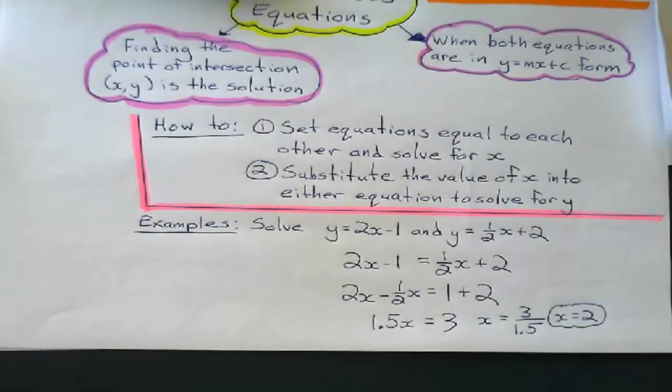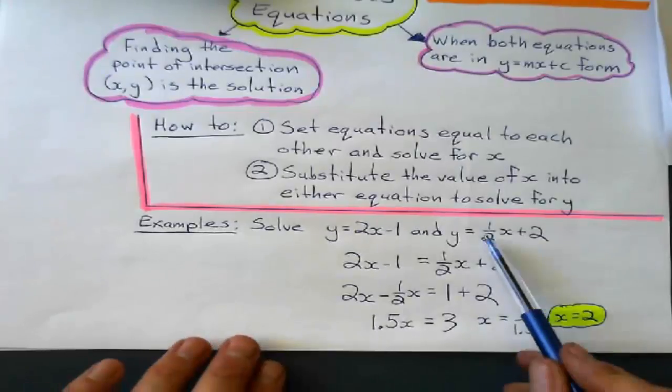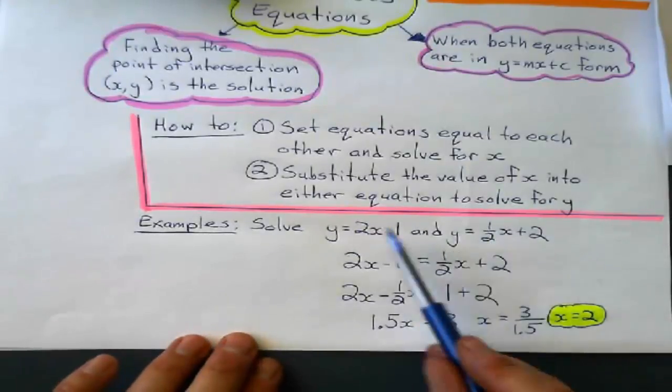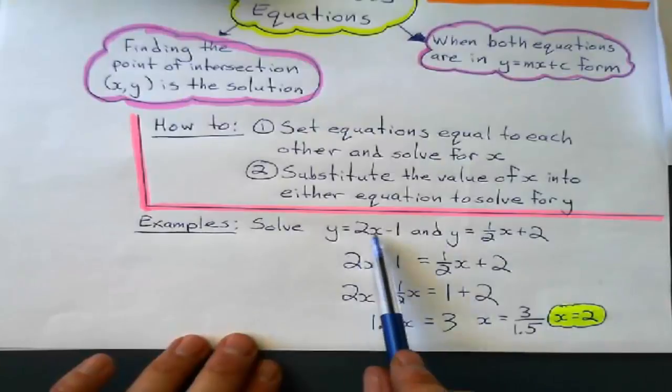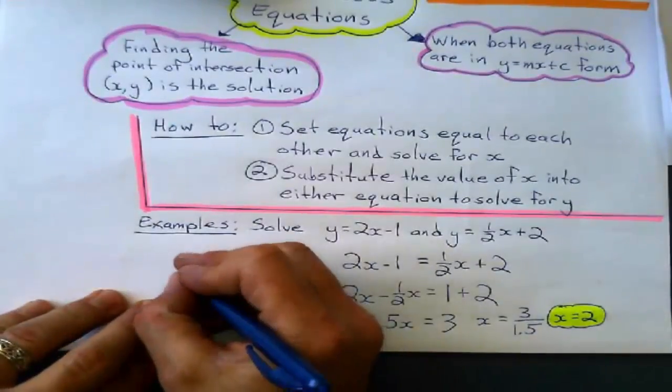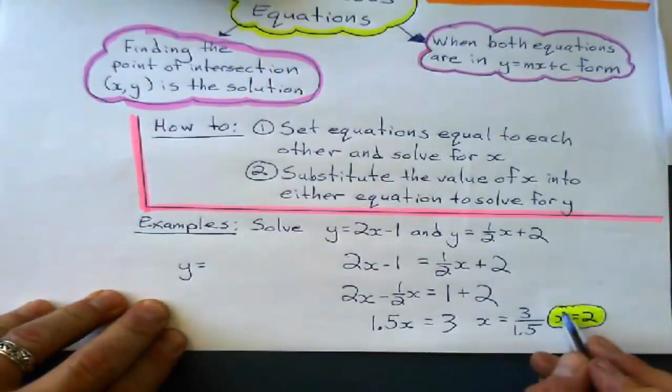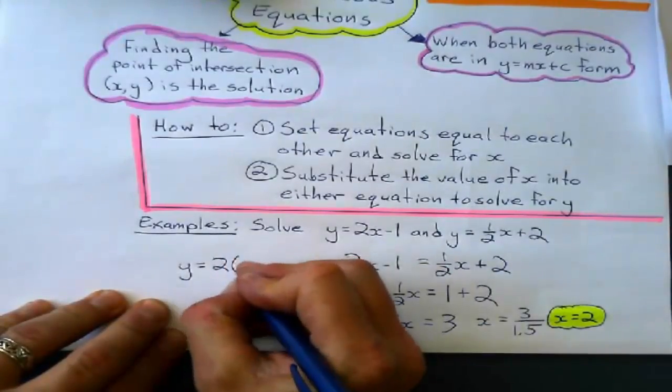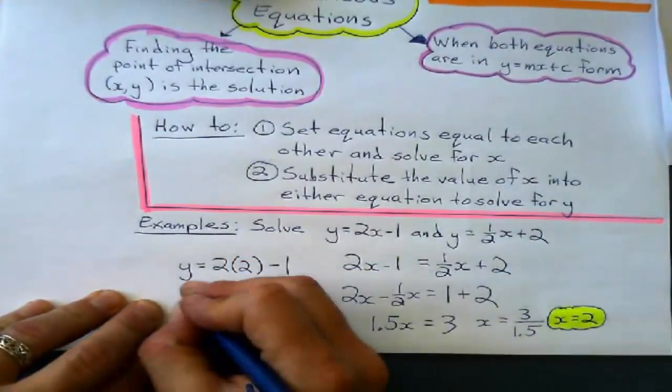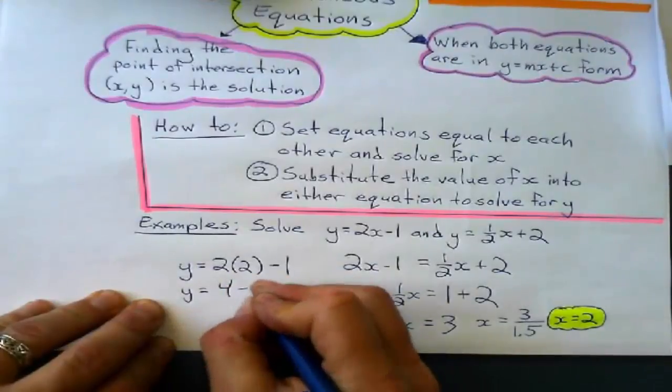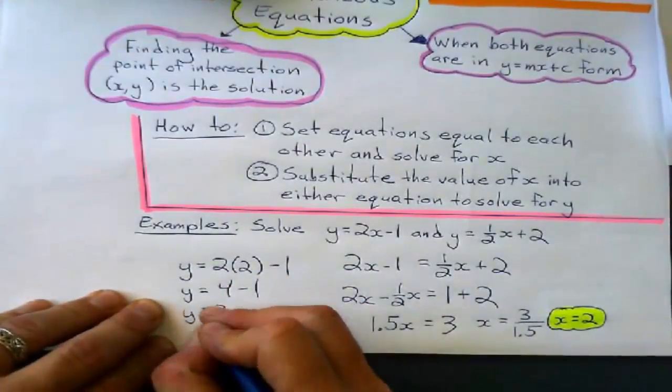So, now I take that 2 and substitute it into either equation. I think I'll substitute it into one that doesn't have a fraction, which is that one. y equals 2x minus 1. So, y equals 2. Now, the value of x is 2. 2 times 2 minus 1 means y equals 4 minus 1. So, y equals 3.